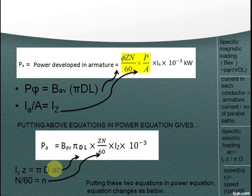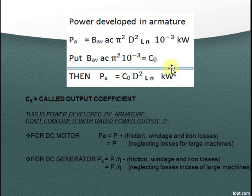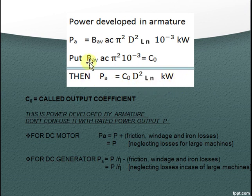We know this equation is equation for specific electric loading, and we also know speed in rps is speed in rpm divided by 60. Substituting these two equations in power equation we will get our final equation like this. Put these things together as C0, it is called output coefficient. Then our final power equation that we have to remember will be like this.